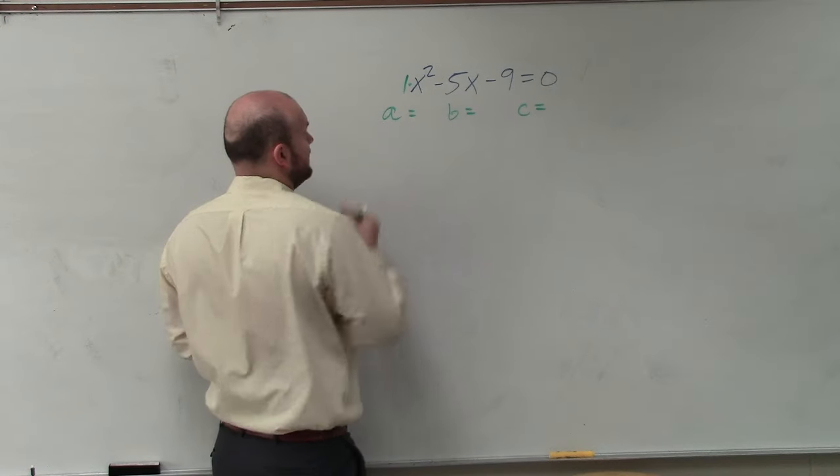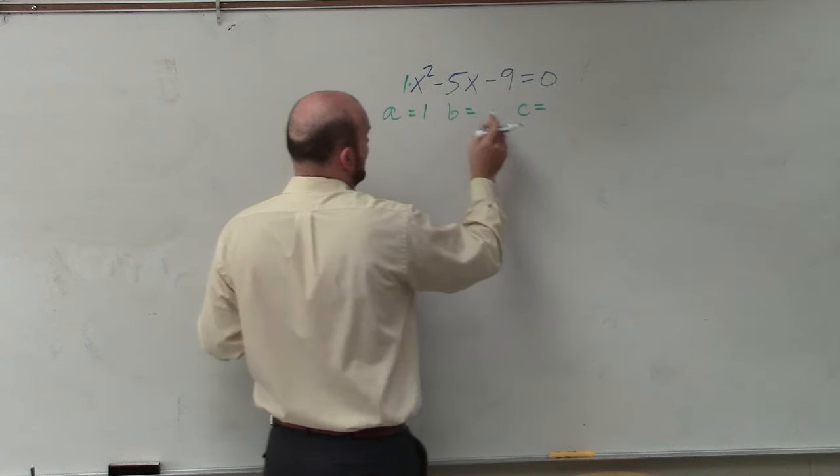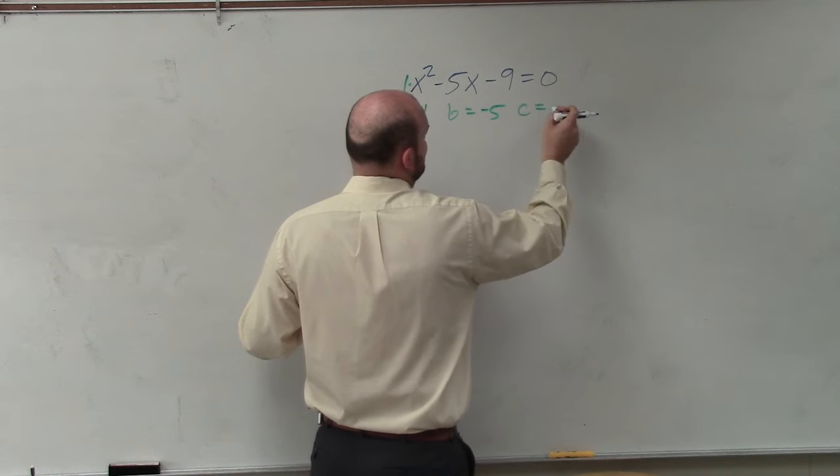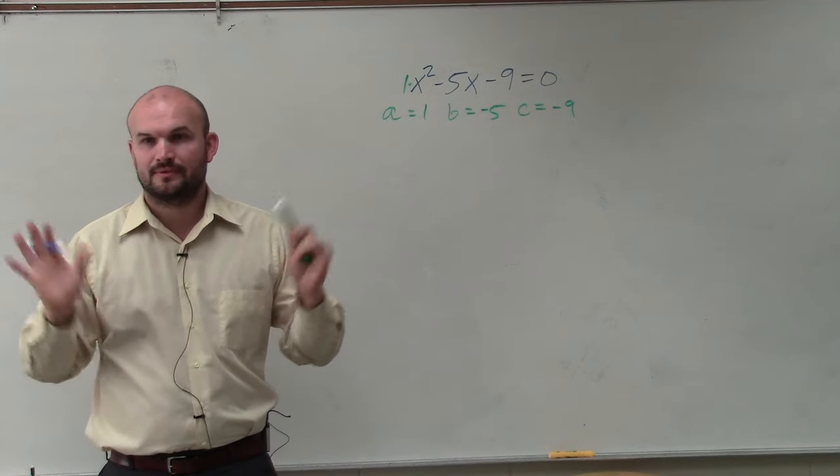So our a, in this case, is going to be 1. Our b, in this case, is going to be negative 5. And our c, in this case, is negative 9. Everybody understand that point? OK.